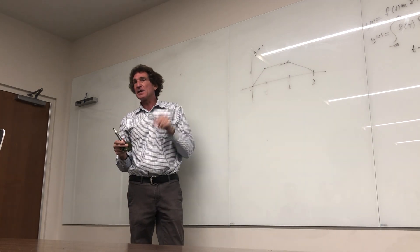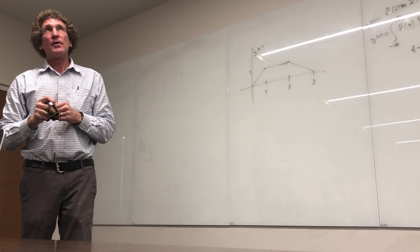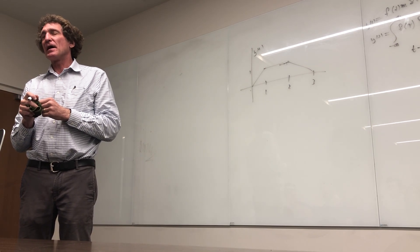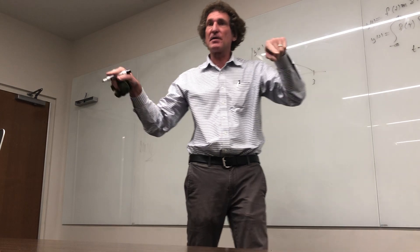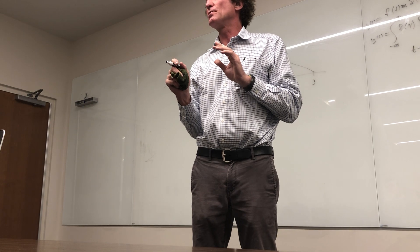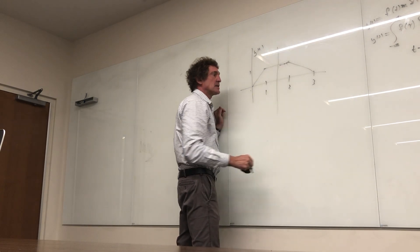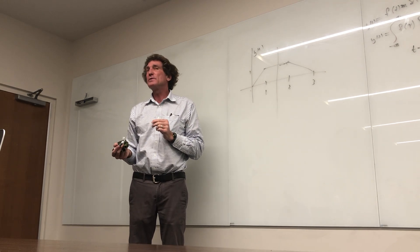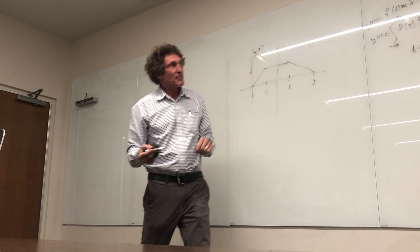The second property: any symmetric functions — ones where if you take the center and flip it you get the same thing, like a triangle or a boxcar — when you convolve two such functions the result will always be symmetric. You can see that right down the center at 1.5, this function is identical on both sides. That will always be true when you convolve two symmetric functions.